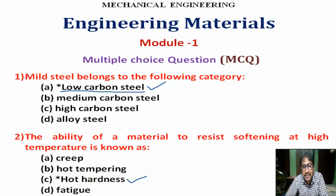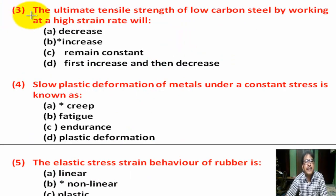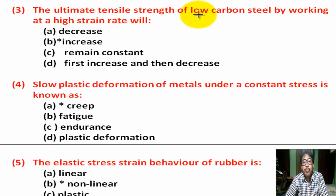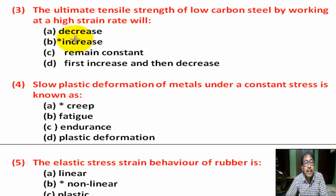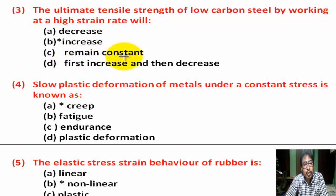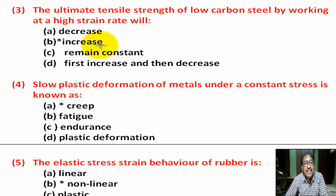Question number 3: The ultimate tensile strength of low carbon steel by working at a high strain rate will — Option A: decrease. Option B: increase. Option C: remain constant. Option D: fast increase and then decrease. Correct answer is Option B — increase.